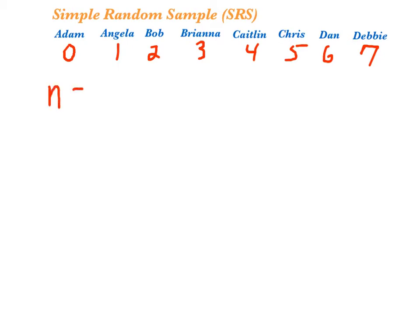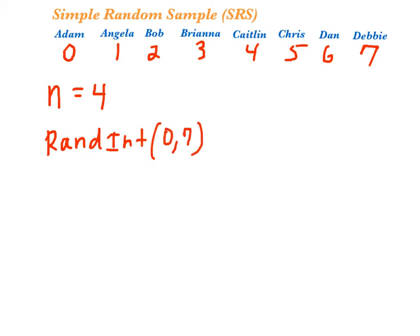Say we want a simple random sample of size 4. To do this we either need to use a random table of digits or a random number generator on the calculator. Let's use the calculator. I'm going to use the calculator command randint(0, 7), which is the max and min of the population numbers. I'm going to repeat this command as many times as it takes to get 4 unique numbers.